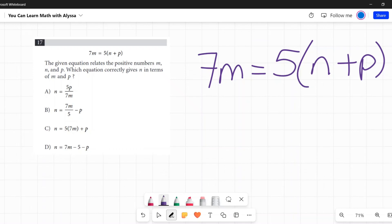So to do that, I'm going to step-by-step isolate n. First, I've got this 5 out here by itself being multiplied times n plus p. So I'm going to divide everything by 5. So on the left, I have 7m divided by 5. And on the right, I have n plus p.